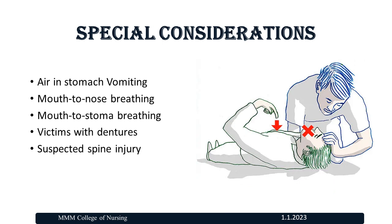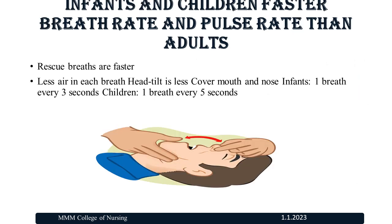Special considerations: air in stomach and vomiting, mouth-to-nose breathing, mouth-to-stoma breathing, victims with dentures, and suspected spine injury. For infants and children: faster breath rate and pulse rate than adults, so rescue breaths are faster with less air in each breath. Head tilt is less; cover mouth and nose for infants — one breath every 3 seconds, for children one breath every 5 seconds.